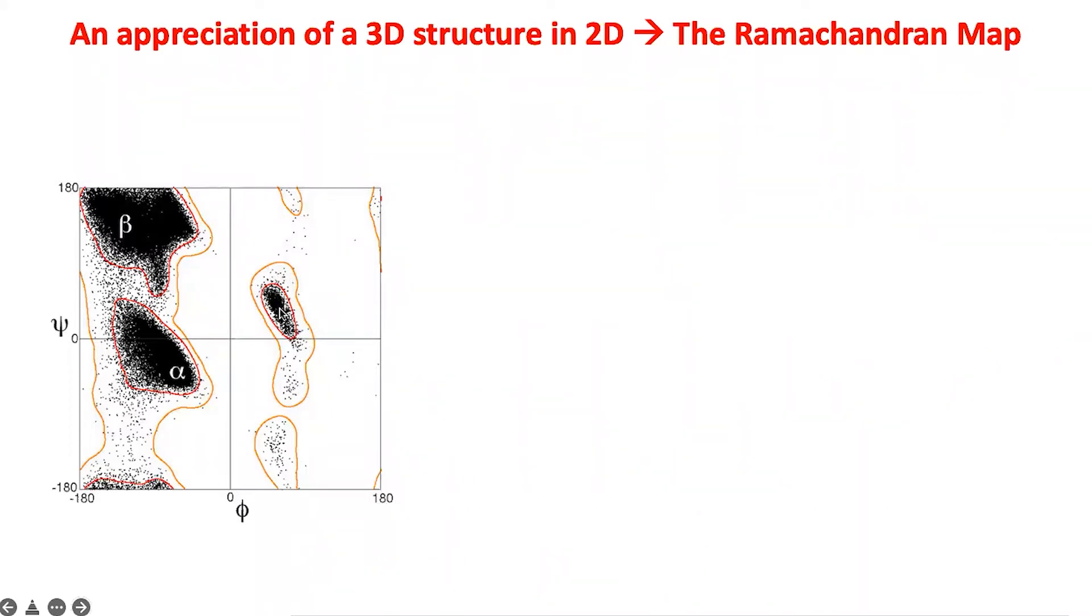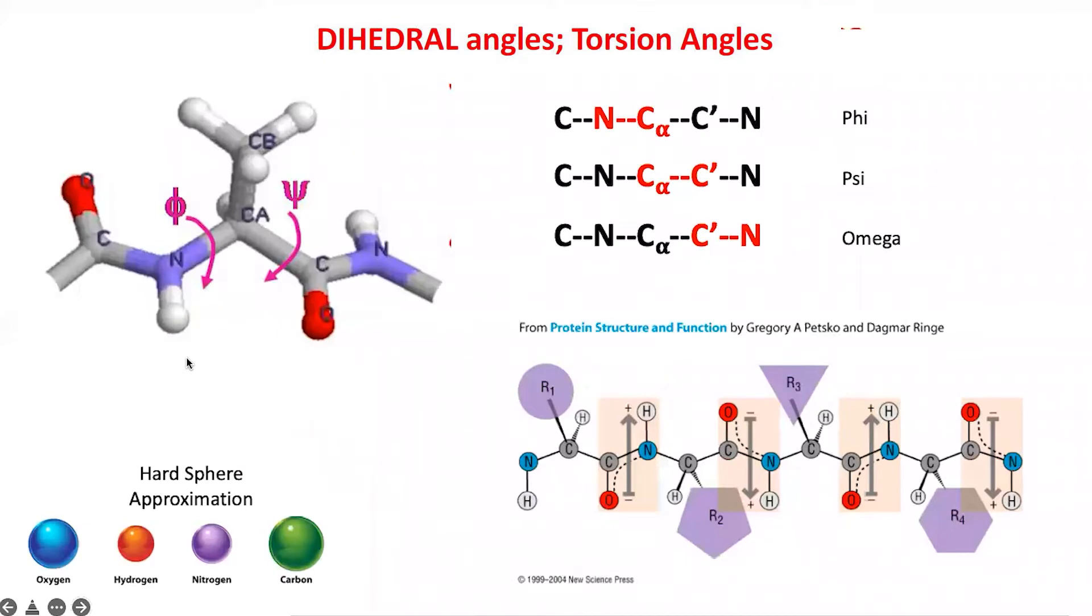Today we model this using energy calculations, but in the 1960s when Ramachandran did it, he used plastic models. He used a hard sphere approximation, giving a certain radius to each atom. He built physical models and turned them around the torsion angles. Phi and psi were the only two things that could be rotated; omega could not be changed as it was at 180 degrees.